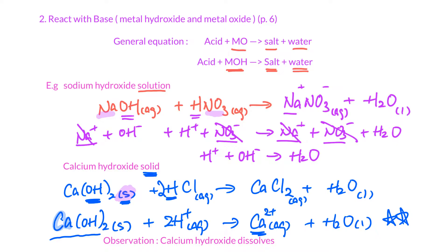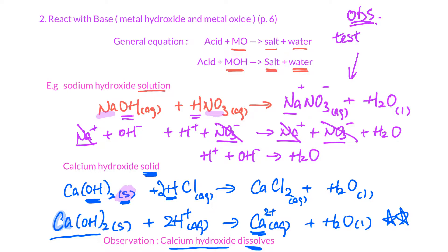So the ionic equation will be different from the NaOH example above. The solid state should not be separated. For observations: since calcium hydroxide is a solid, it will dissolve in the process. For the NaOH reaction above, there is no solid and no gas formed — the only observation is that the test tube becomes warm.